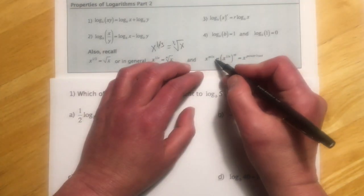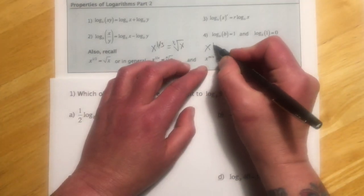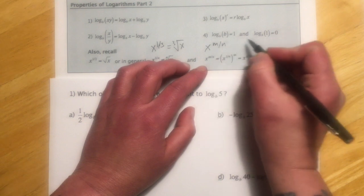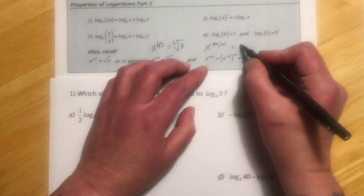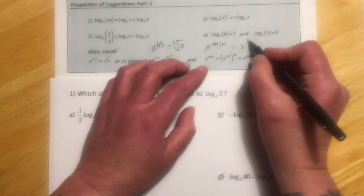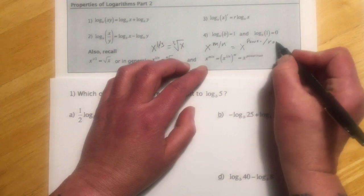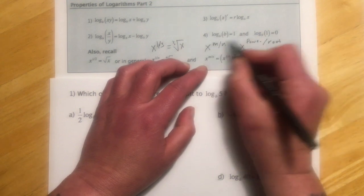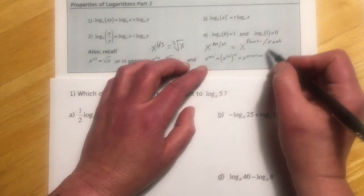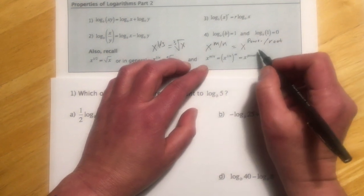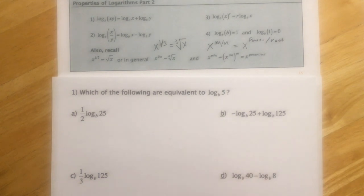And x to the m/n — think of that as x to the power over the root, because the numerator is the power and the denominator is the root. You can treat those as two separate things.